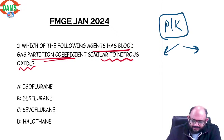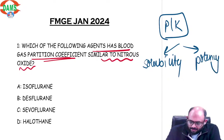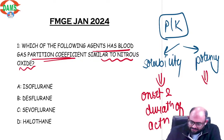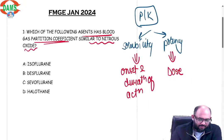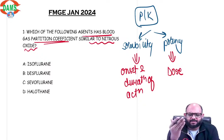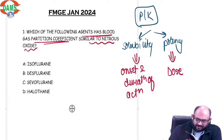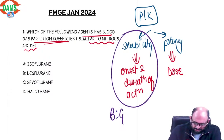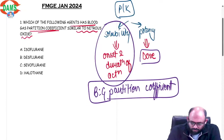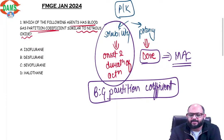We know there are two aspects of pharmacokinetics of inhaled anesthetic agents. First is one that decides solubility, and another that decides potency. Solubility decides the onset and duration of action, and potency decides the dose. This solubility is decided by an entity called the blood gas partition coefficient, and potency or dose is decided by an entity called MAC.